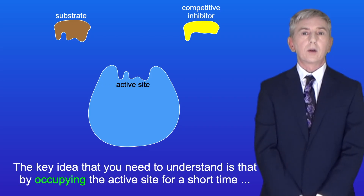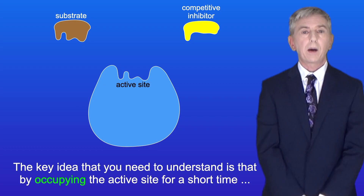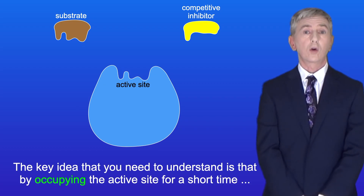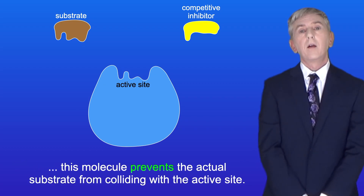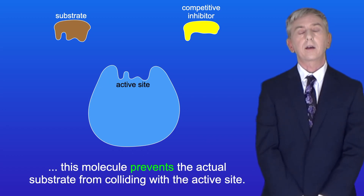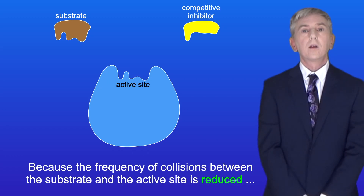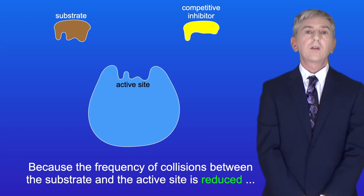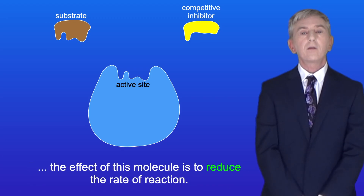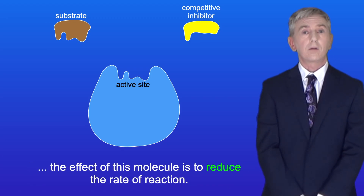The key idea is that by occupying the active site for a short time, this molecule prevents the actual substrate from colliding with the active site. So because the frequency of collisions between the substrate and the active site is reduced, the effect of this molecule is to reduce the rate of reaction.